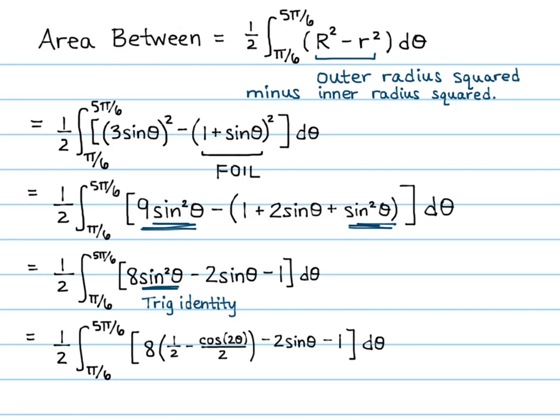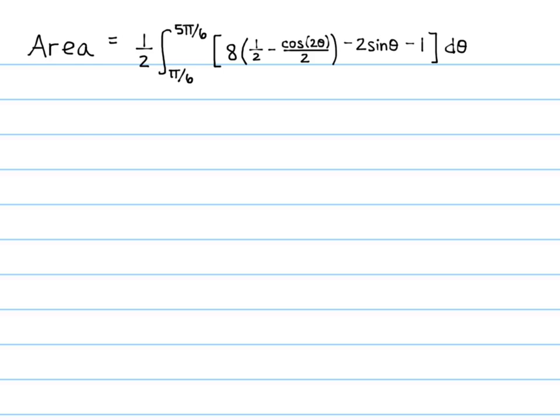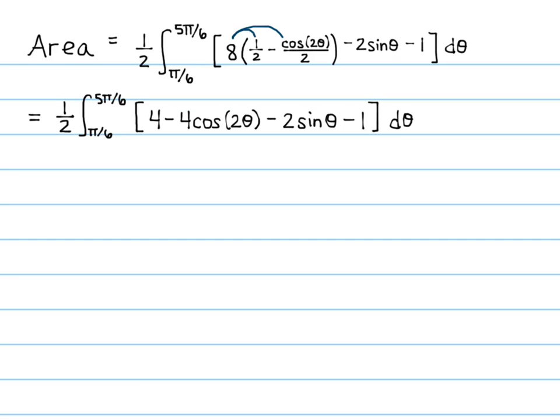Distributing the 8 to simplify further before taking the antiderivative, we have one half times the integral from pi over 6 to 5 pi over 6 of 4 minus 4 cosine of 2 theta minus 2 sine of theta minus 1, all times d theta.